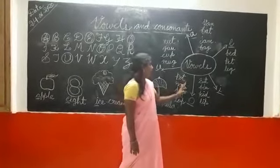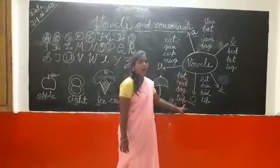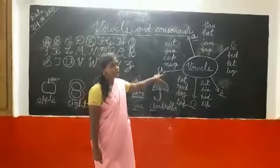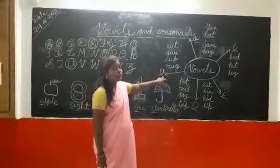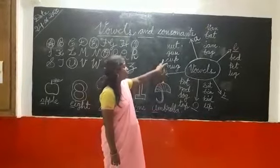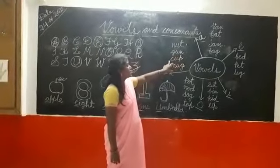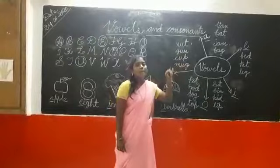And next we learn about U. Here are few examples of sound of U. N-U-T, nut. G-U-M, gum. C-U-P, cup. M-U-G, mug.